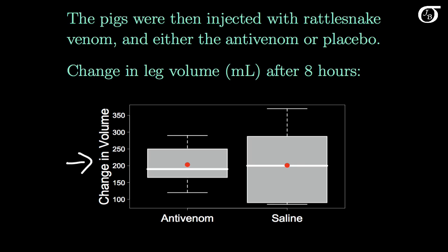One thing we can notice here, it does appear as though the swelling in the pigs in the saline group had a little more variability than that of the antivenom group.